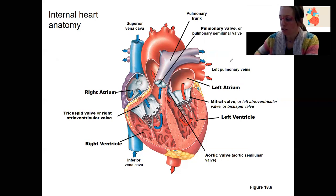So I told you there are these four valves. Here they are with names. These two that separate the atria and ventricle are called AV valves, atrial ventricular valves.